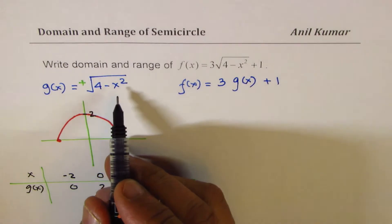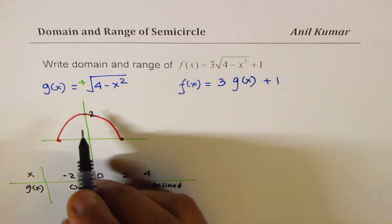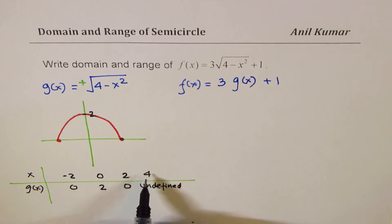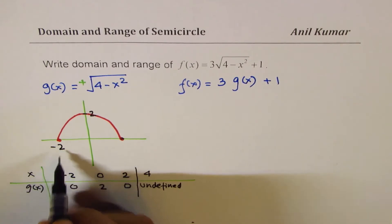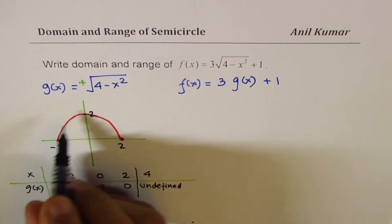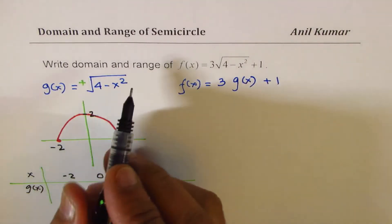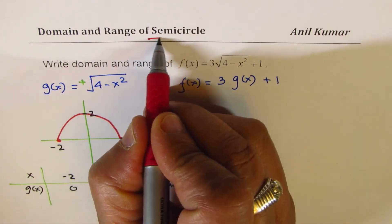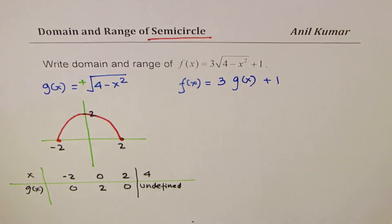So if I write some other value in between, you can get other points. However, with minus 2, 0, 2, and 4, we know it is outside. So at minus 2 it is 0, plus 2 it is 0. What we get here is a semicircle. So basically we are trying to find domain and range of a semicircle.